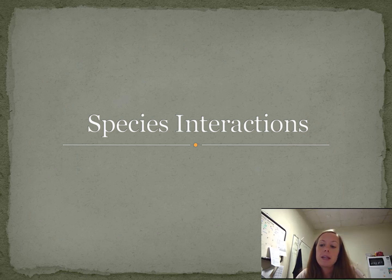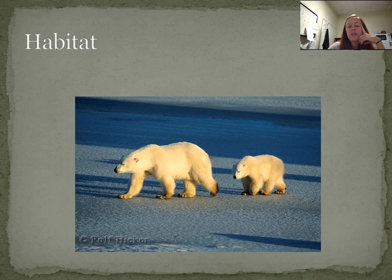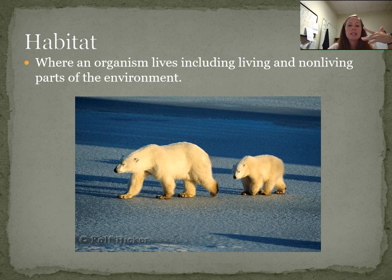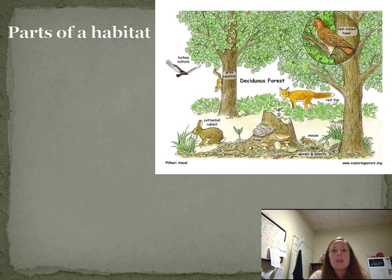This week we're going to talk about species interaction — what kind of species we find in our ecosystem and how they interact with each other. The first thing we need to figure out is what a habitat is. A habitat is where organisms live; it includes the living and non-living parts of the environment, so it's part of their ecosystem. You can think of a hamster's habitat, like when you buy a little hamster cage.